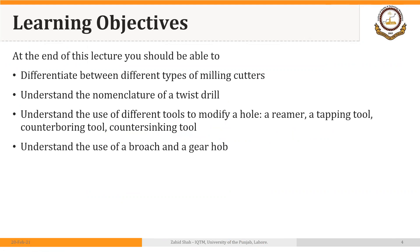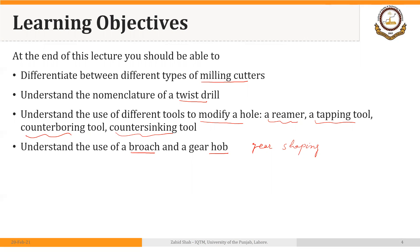We will specifically focus on different types of milling cutters. Then we will see the basic nomenclature of a twist drill, and then we will discuss applications of different tools to modify a hole, including a reamer, a tapping tool, counter-boring tool, and counter-sinking tool. Toward the end we will see different tools used to make gears, including a broaching tool, a hobbing tool, and a gear shaping tool. In each segment I will provide links in the description to videos showing these multiple point cutting tools in action.